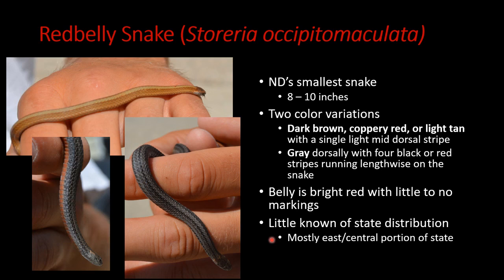Next is the red-bellied snake or northern red-bellied snake, Storeria occipitomaculata. This is North Dakota's smallest snake — only about 8 to 10 inches long and relatively skinny. There are two color variants: a dark brown or copper variant and a gray variant. They're the same species and in both cases the belly is a gorgeous red or orangish red. They have very little marking — some striping but not a lot of pattern. We really don't know a lot about their state distribution because they spend so much time undercover; most observations have been from the eastern portion of the state with a few in the central portion.